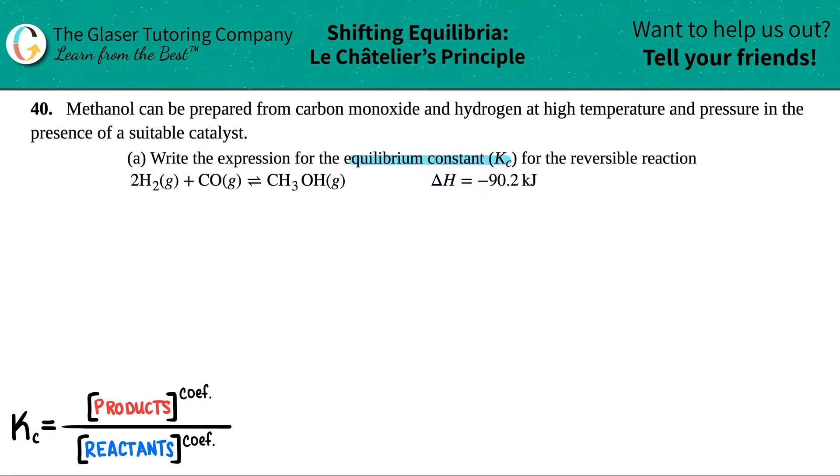Okay, so this one will kind of be like a review. There's a few parts for this question, so we're going to do each bit by bit. So in this case, we just have to write the Kc formula for 2H2 gas plus CO gas, and this comes to equilibrium, I see the double arrow, with CH3OH gas. Okay, so we've done tons of problems like this one. We just have to basically write the Kc formula.